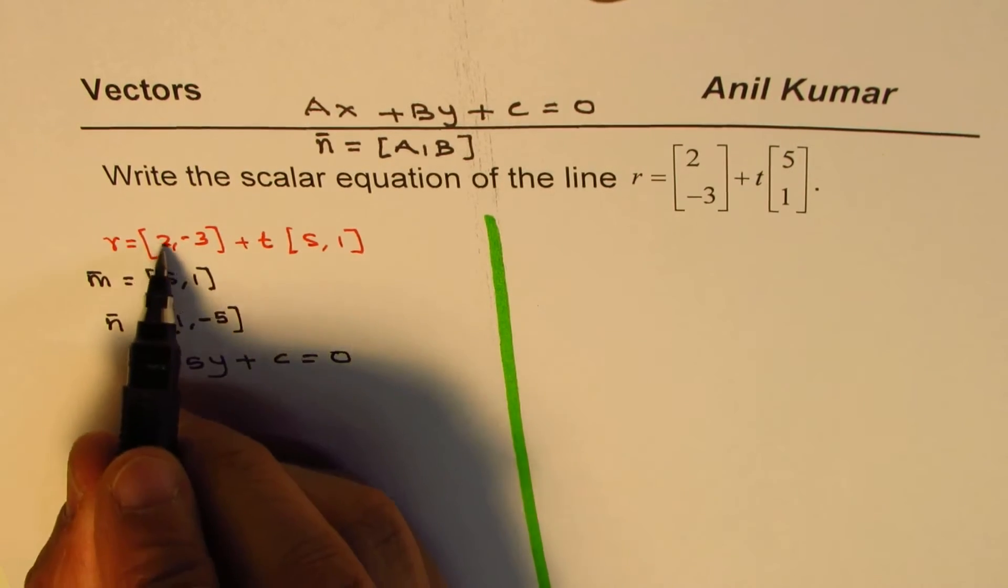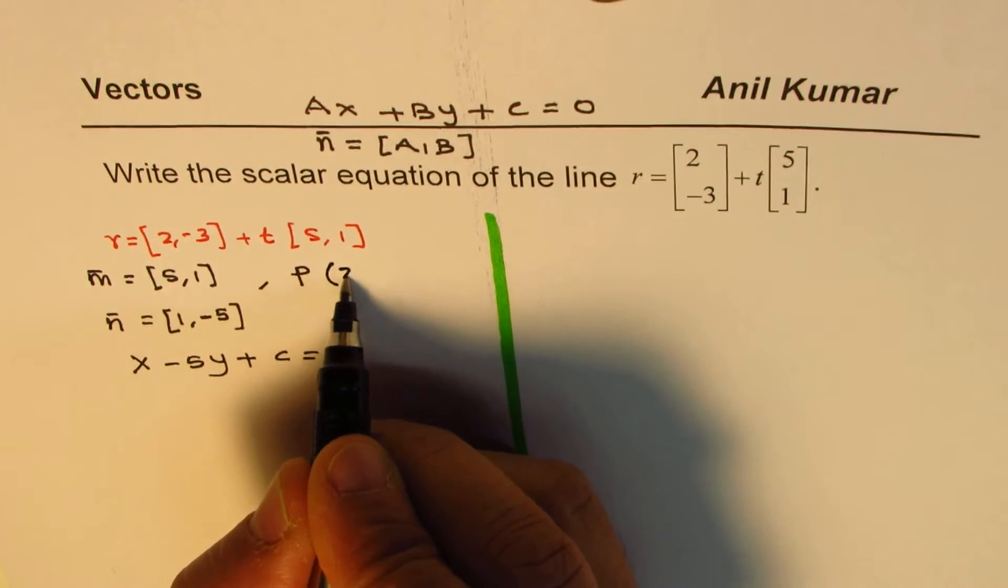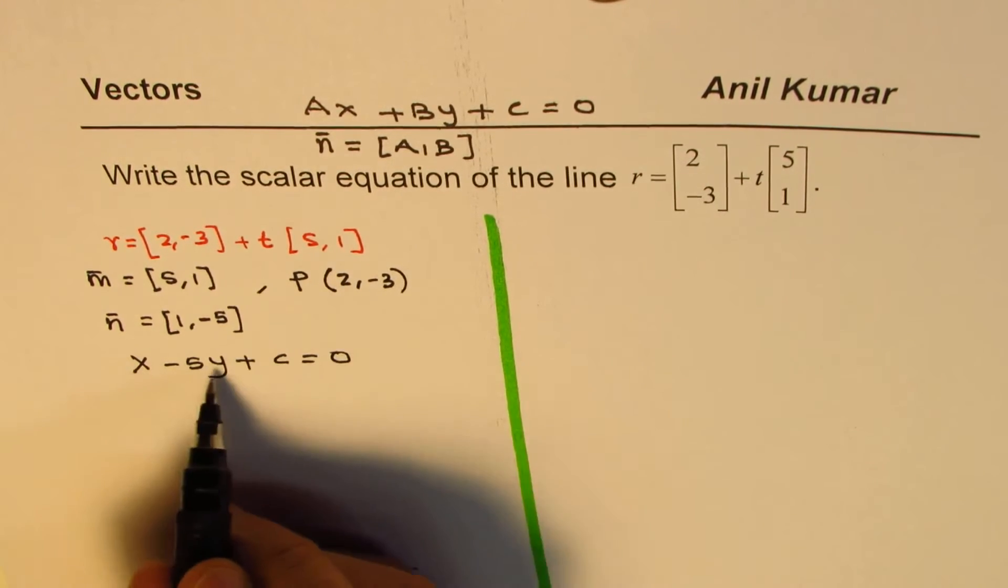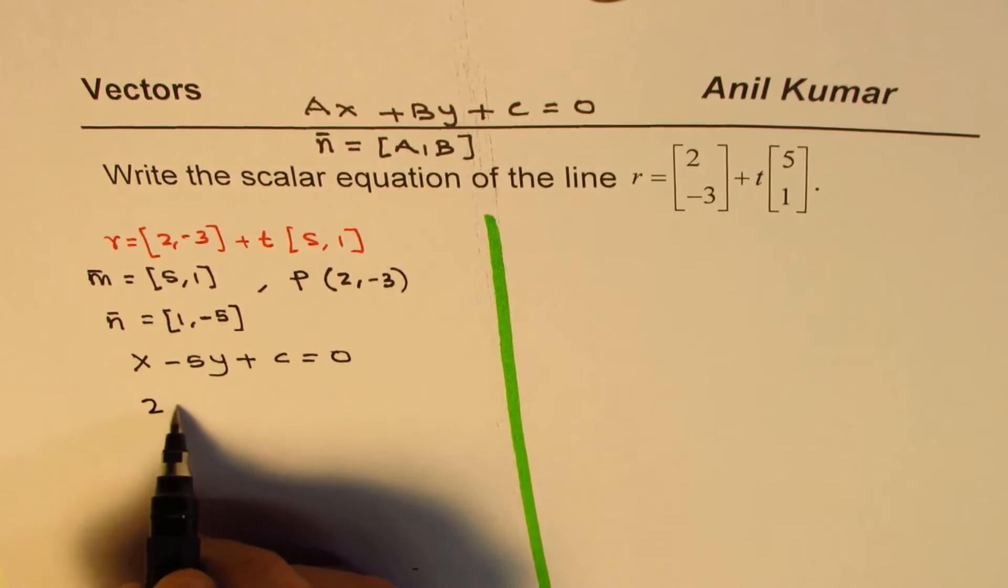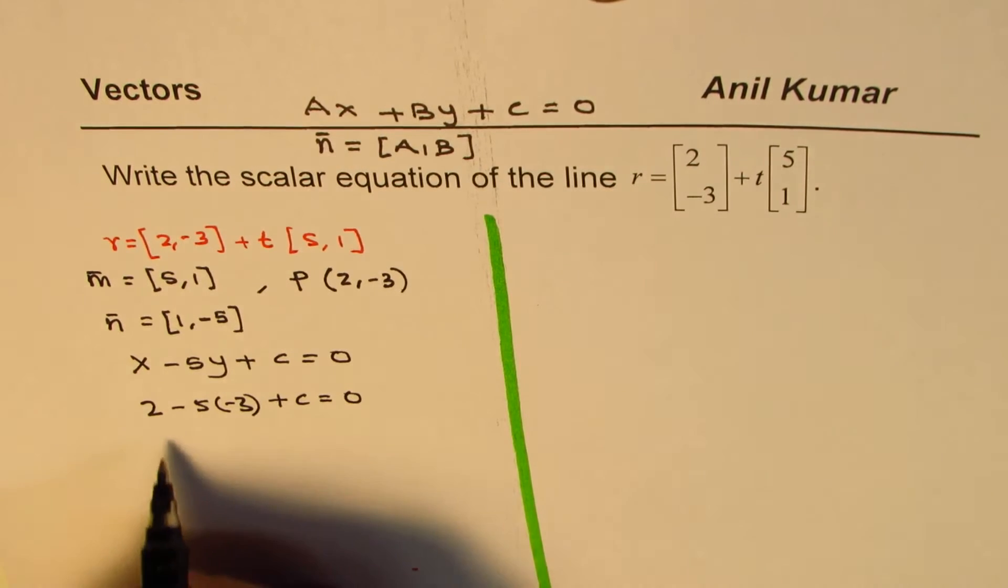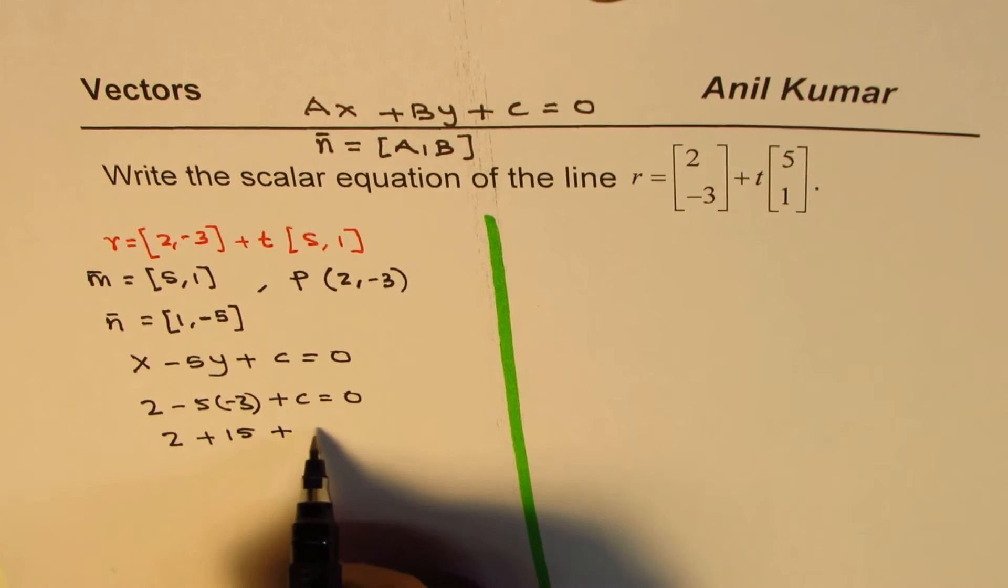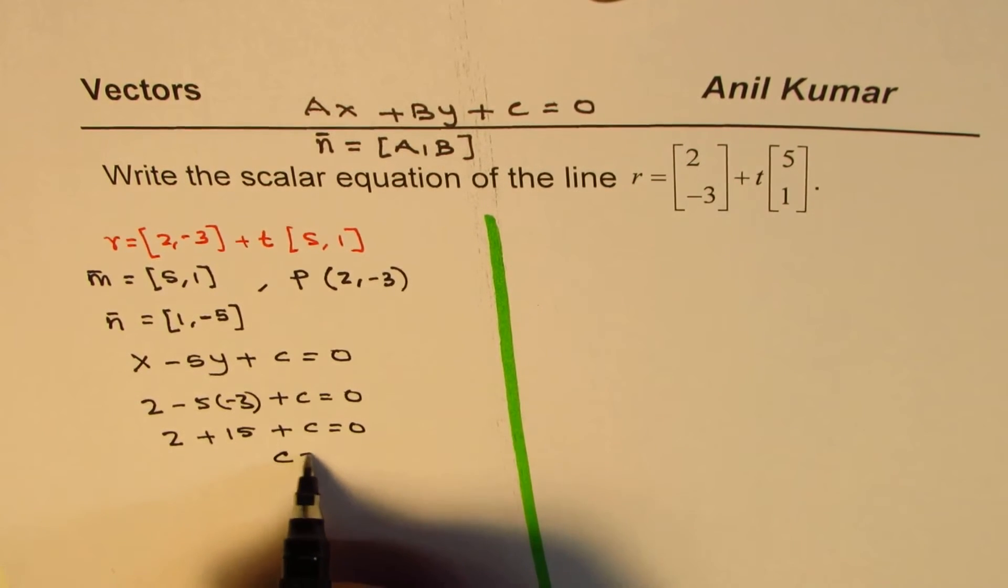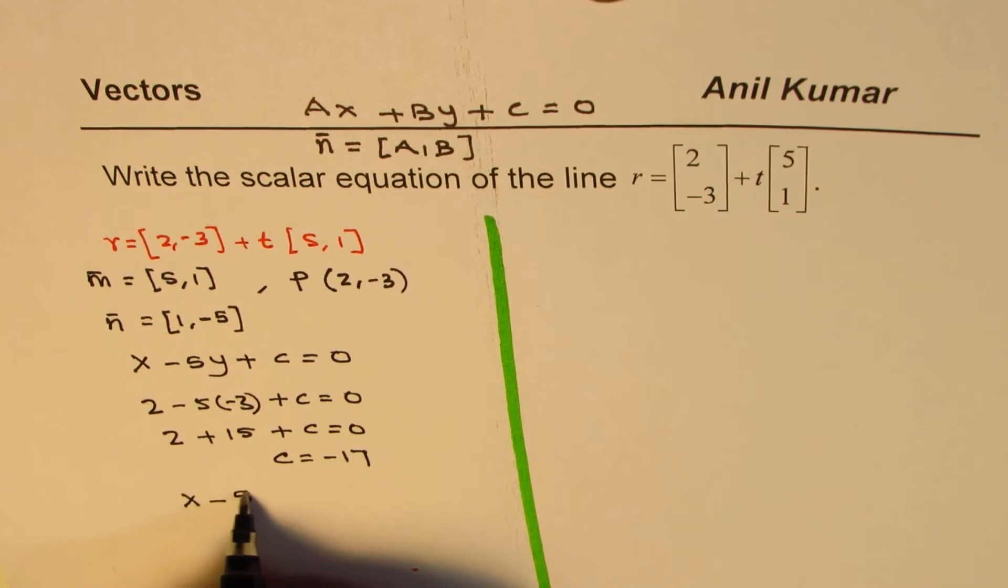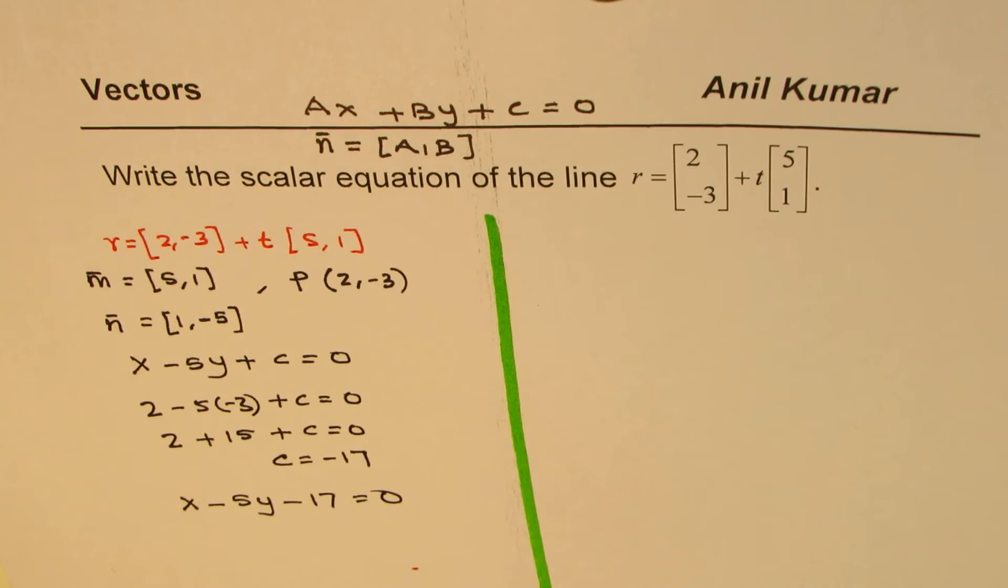To get the value of c, we'll use the point. We are given the position as (2, -3), so we can replace x and y with 2 and -3. So 2 minus 5(-3) plus c equals 0. And from here we can find what c is. So we have 2 plus 15 plus c equals 0, or c equals -17. Therefore, the equation is x minus 5y minus 17 equals 0. So that becomes the scalar equation of the line.